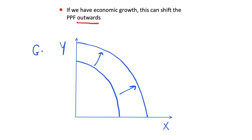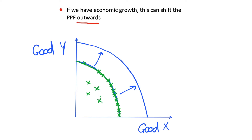Let's start with a simple PPF diagram. On the y-axis we have good Y — in the past I've used pizza for this. On the x-axis we have good X — this could be ice cream as used in a previous video. In green, we have this PPF curve, which shows all the possible combinations along this curve that we can produce of these goods. These are the maximum bundles we can produce — we can produce inside the curve too, but that would be inefficient.